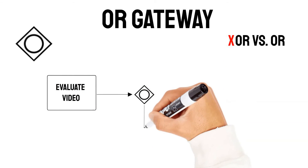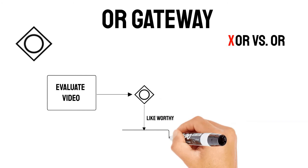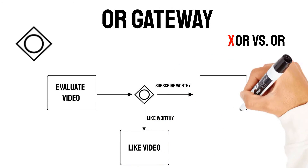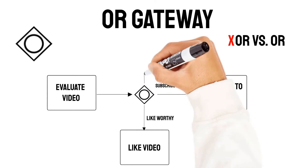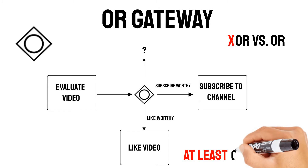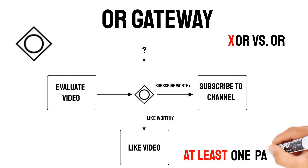This video might be like-worthy to you, so you would like the video. Or maybe even subscribe-worthy, so you would subscribe to the channel. Or even something else. The key of the inclusive OR is that at least one path has to be chosen. You can also go multiple paths, or even all, but at least one — that's why we also call it the inclusive OR. To get the concept of this inclusive OR can be a bit hard, as we use OR in our daily life as an either-or.